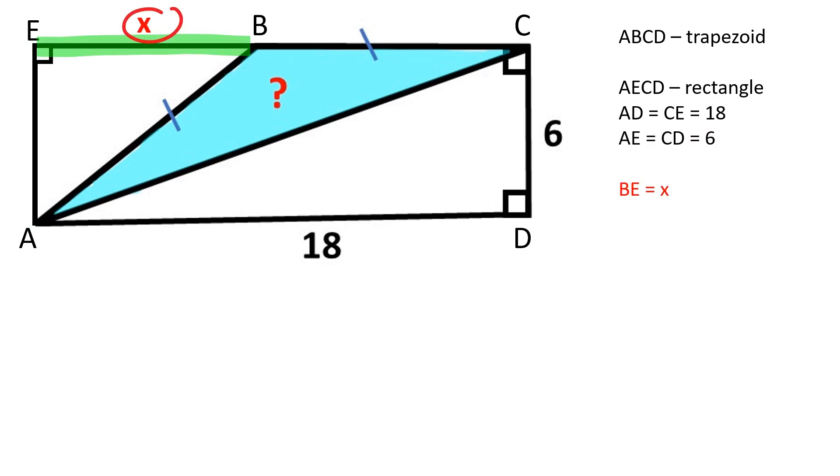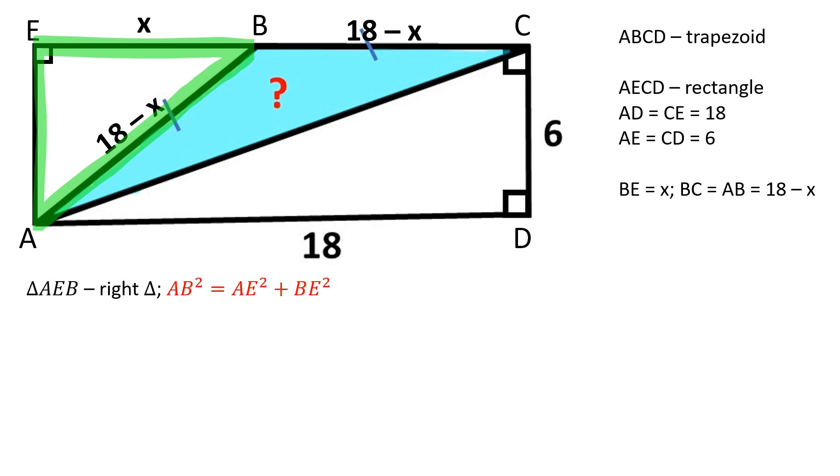Let's represent BE as X. BC is equal to AB and equals to 18 minus X. Triangle AEB is a right triangle.